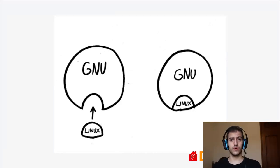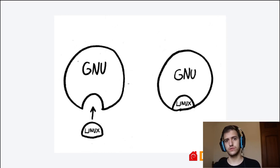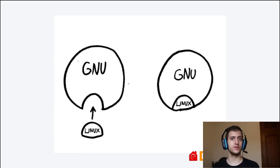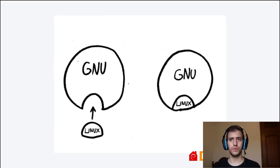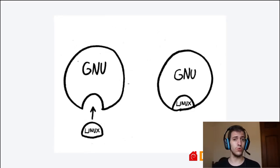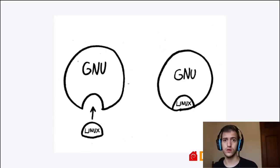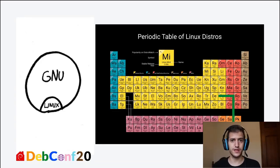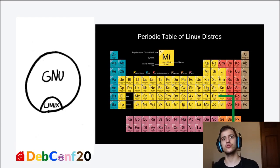GNU is the big part and Linux fits together with it. GNU also fits with other kernels — for example, there's the Hurd kernel being built by the community and run by the Free Software Foundation, which is free software so people can improve it and help in the development. We'll also see distros in the future with GNU Hurd instead of GNU Linux. They already exist, but they are not 100% stable to use on a daily basis like GNU Linux.